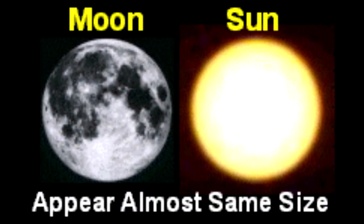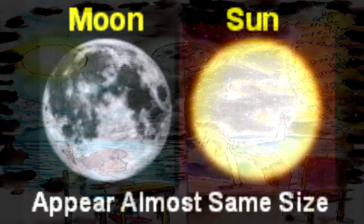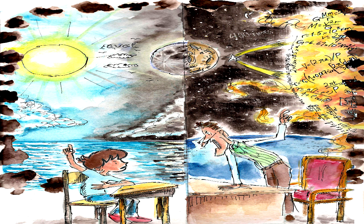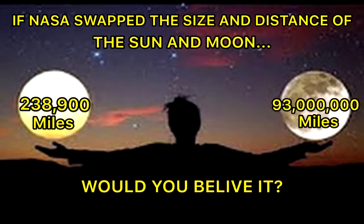Yet another example is the alleged size of the Sun, Moon, and stars. In the geocentric level Earth cosmology, the Sun and Moon are equal-sized, equidistant luminaries, just as they appear. In the heliocentric globe Earth cosmology, however, the Sun is allegedly four hundred times larger than the Moon, but also four hundred times farther away, which makes them only seem the same size. In reality, nobody has ever traveled to the Sun to prove such a claim, and until they do, Occam's razor would suggest not assuming such a thing.